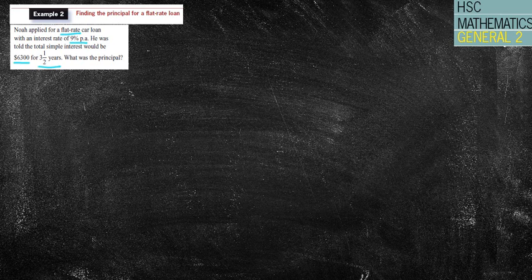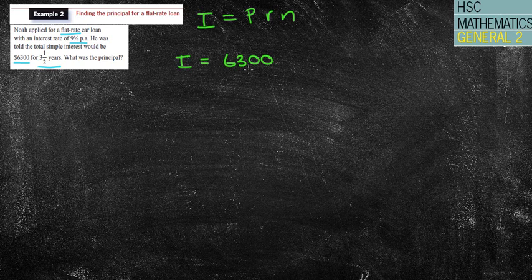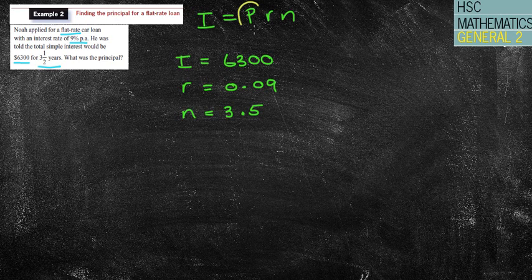So I guess if you're writing out some important information, we've got here for our I equals P R N. Well, we were told that the I, the simple interest, would actually be $6,300. We were told that the interest rate was 0.09. And we're being told that our N is 3.5 years. So this question is a bit more challenging because you're being asked to find the P.